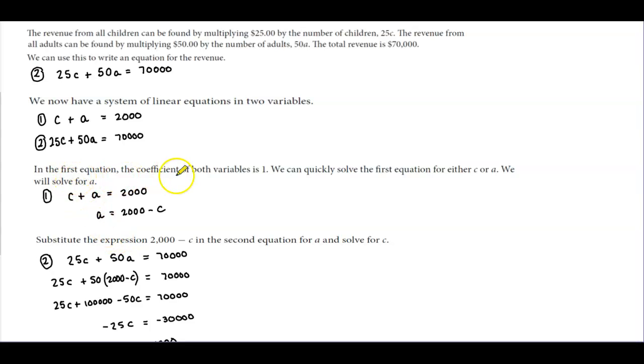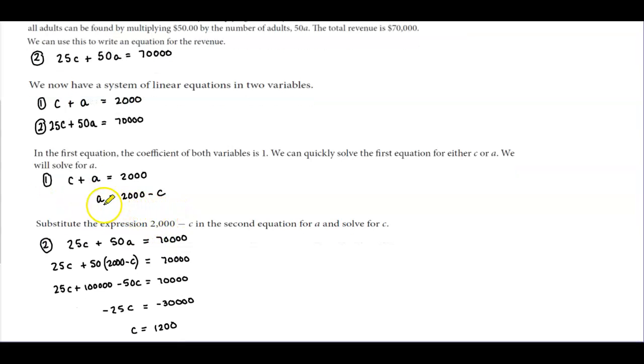In the first equation, the coefficient of both variables is 1, so we can quickly solve the first equation for either C or A. We'll solve for A. Subtracting C from both sides, A = 2,000 - C.